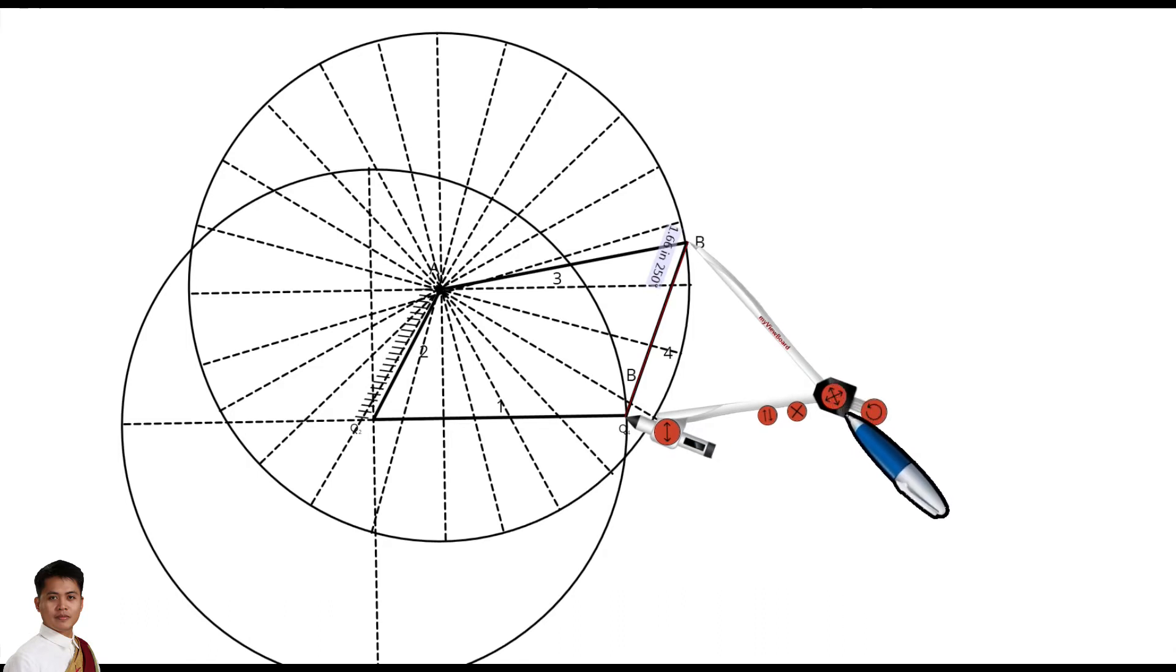And then after that, we can now start tracing the point of Q4 with respect to the change in position or different position of our B.